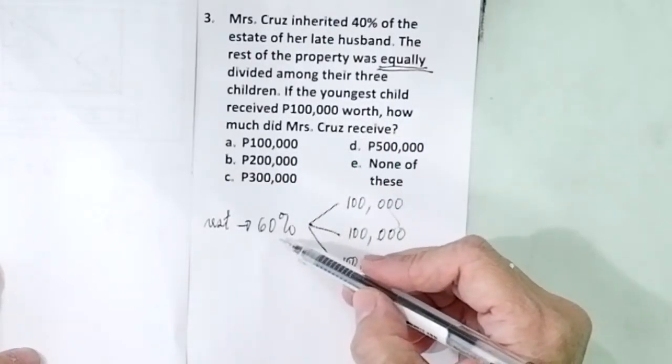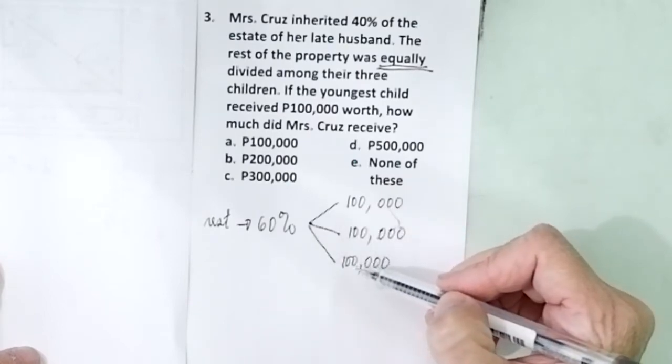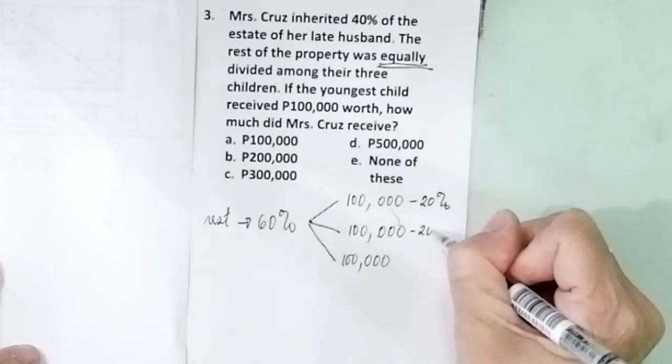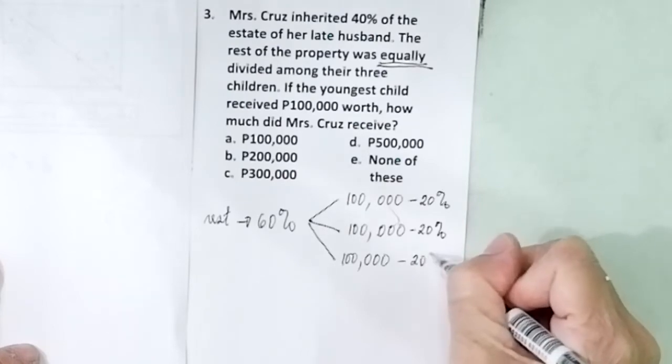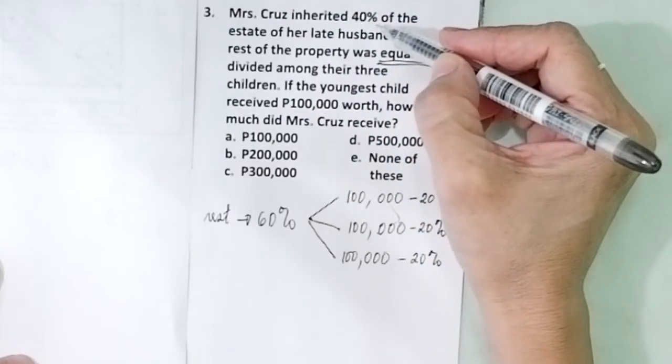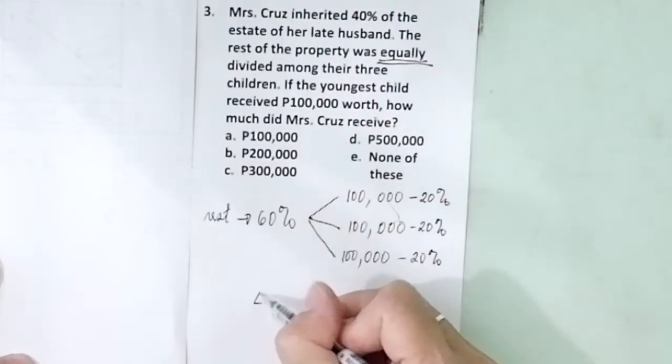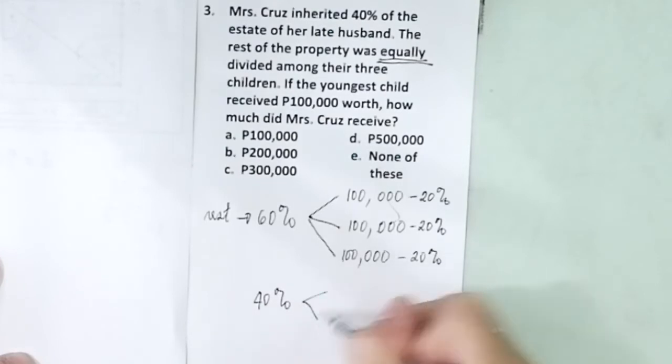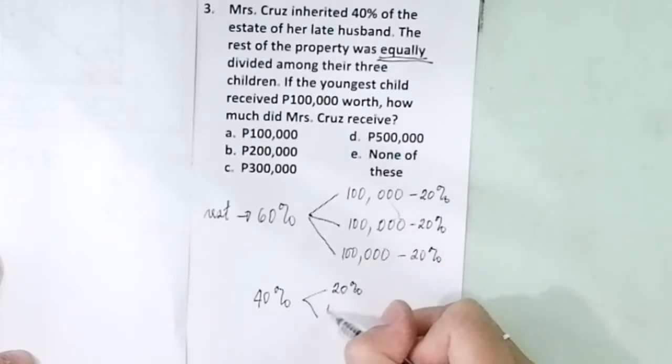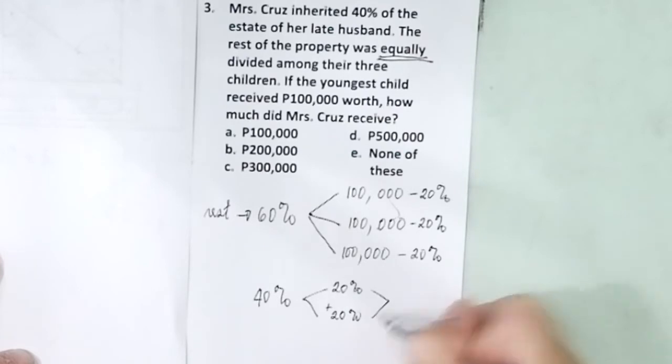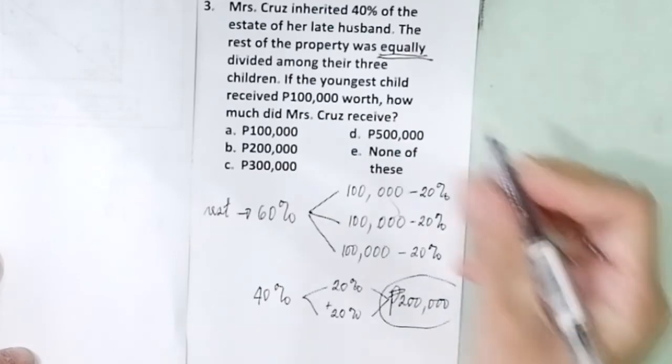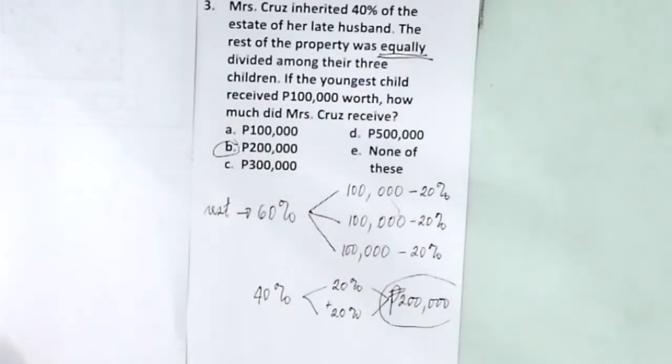How much did Mrs. Cruz receive? If this is 60%, you divide it by three because there are three children. So one child received 20%, isn't it? So 100,000 is 20%. How much did Mrs. Cruz inherit? How many percent? 40%. If for every 20%, you get 100,000. So 40% is 20% plus 20%. So this will be 200,000. Mrs. Cruz received 200,000. The answer is letter P.